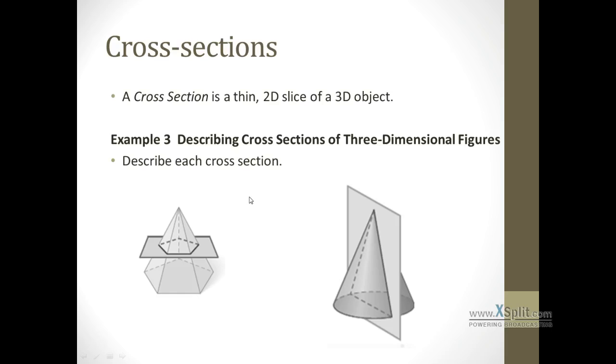A cross-section is the thin two-dimensional slice of a 3D object. Think about cutting a piece of cheese very, very thin with a double-bladed knife. You're going to look at what shape that thin slice is. For example, in this diagram here, if I trace the thin slice that we cut out of this pentagonal pyramid, we get a pentagon if we cut straight across. So we'd say that the cross-section is a pentagon. Similarly, right here, if we cut a cone, but we cut straight downwards, it's going to cut a piece that looks like that that I've highlighted in red. We end up cutting a triangle.